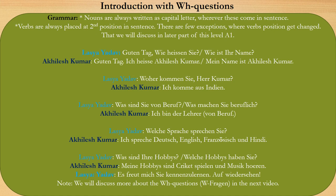There are some grammar rules we need to remember. First, nouns are always written with a capital letter wherever they appear in the sentence — whether at the beginning, the middle, or the end — they will always be written with a capital letter. Second, verbs are always placed in the second position in a sentence. There are a few exceptions where the verb's position changes, which we will discuss in the later part of this level.